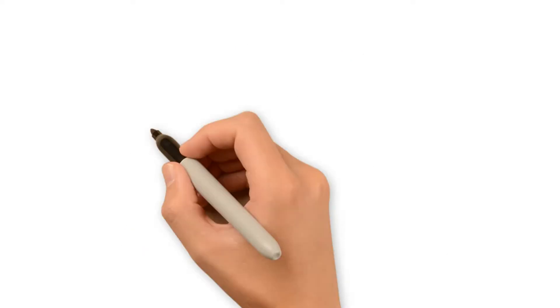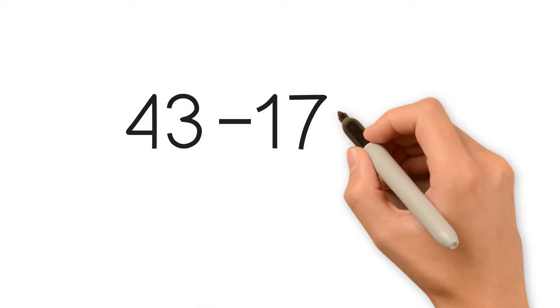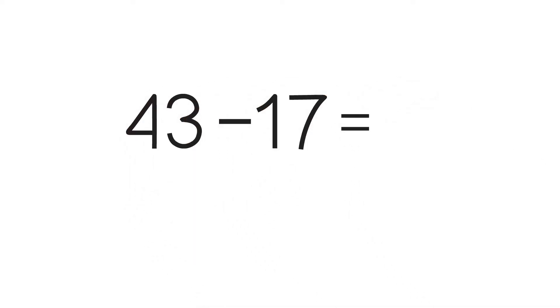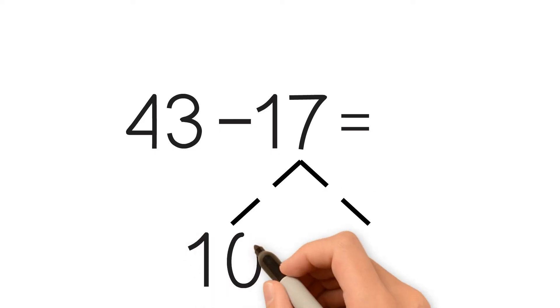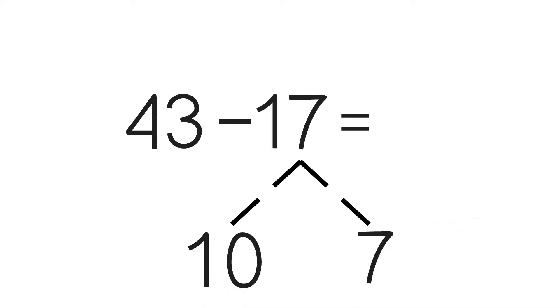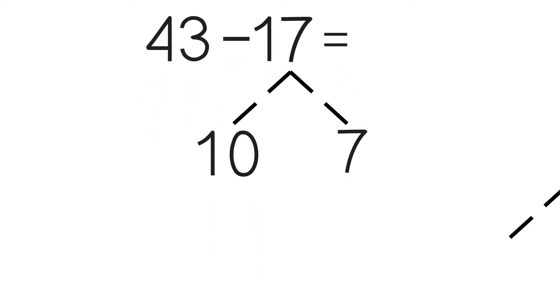Let's try another example. 43 minus 17 equals... First, we break apart 17 into 10 and 7. 7 is greater than 3, so it's harder to subtract. So we break it up further into 3 and 4. 3 minus 3 will be easy to do, which is why we break it up like so.